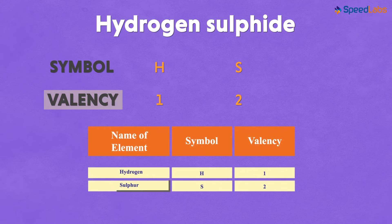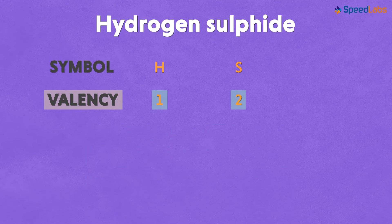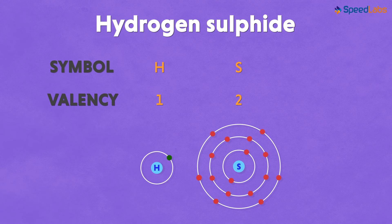The valency for Sulphur is 2, it needs two electrons to complete its octet. But hydrogen has its valency as 1. It requires one electron to attain stability. So this indicates to us that both the atoms will be sharing electrons with each other.